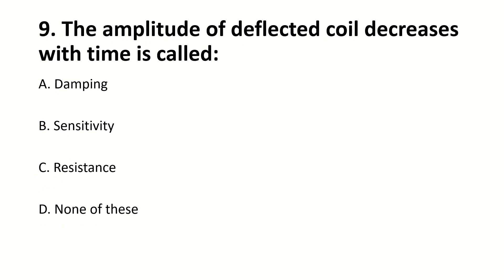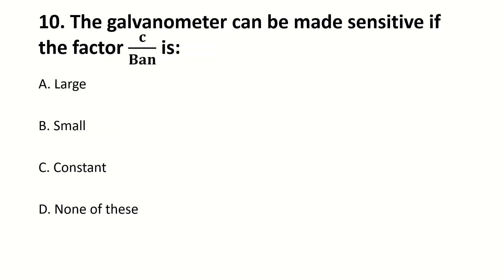The amplitude of a deflected coil decreasing with time is called — blank. Right answer is A: damping. The galvanometer can be made more sensitive if the factor C divided by band is — blank. Right answer is A: large.